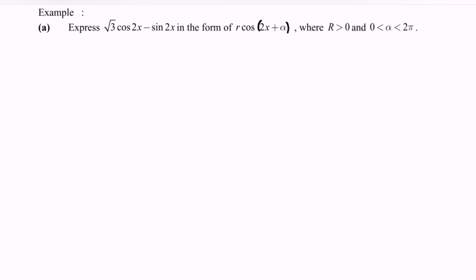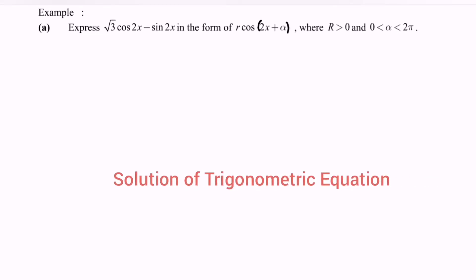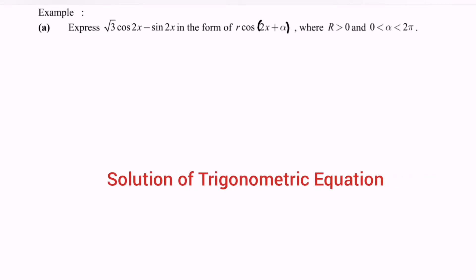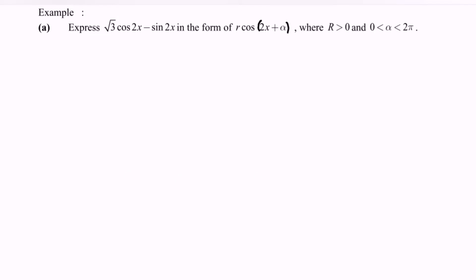Hello everyone. In this video I'm going to discuss an example for the solution of a trigonometric equation by using the R expression. Express √3 cos2x minus sin2x in the form of R cos(2x + α), where R must be greater than 0, and α is in between 0 and 2π. The question asks us to express this in the form of a compound angle.